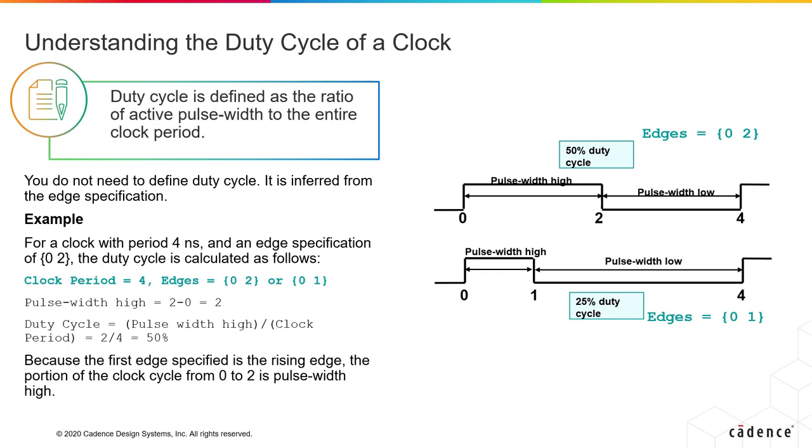Let us look at the following examples. Here, a clock is defined by its period of 4 and the edges of 0 and 2. Duty cycle is calculated as pulse width high divided by clock period, as shown in the top waveform, which is 2 minus 0 divided by 4. Therefore, we have a 50% duty cycle. On the bottom waveform the edges are defined at 0 and 1. Therefore, the pulse width is high only for one unit, and so it's a 25% duty cycle.